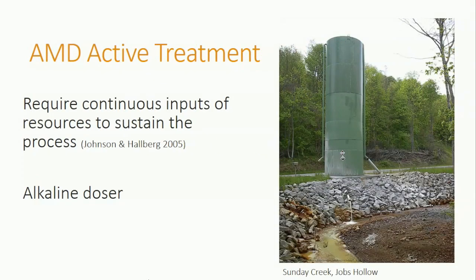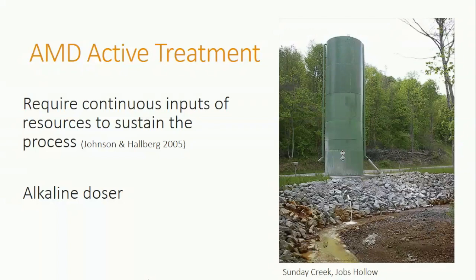There are several ways land managers and researchers neutralize the acid caused by acid mine drainage. There are two general treatment methods: active and passive. Active treatments require continuous inputs of resources to sustain the remediation process. We're only going to mention one of the most popular active treatments, which is an alkaline doser. Alkaline is another word for the basic portion of the pH range. An alkaline substance, usually lime, is put into large silos near the stream and is dosed into the stream to neutralize the AMD-affected stream.